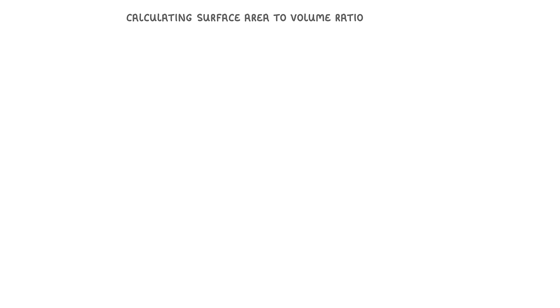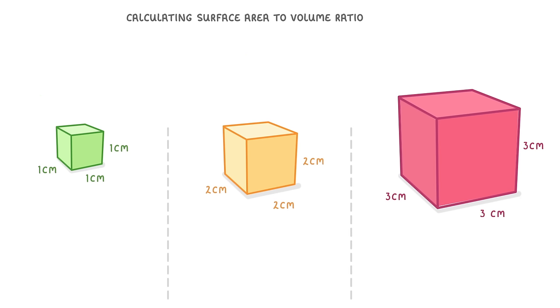Now calculating the surface area and volume of a real organism is actually really hard because they're weird shapes, so instead, to see this idea in practice, let's take these three cubes and see how their surface area to volume ratio changes as they get bigger.